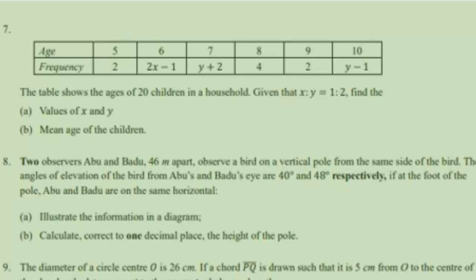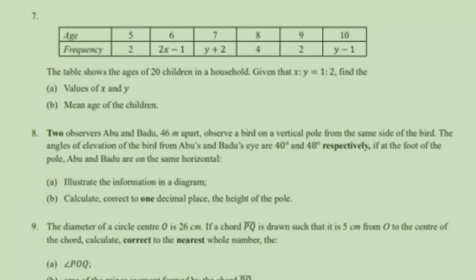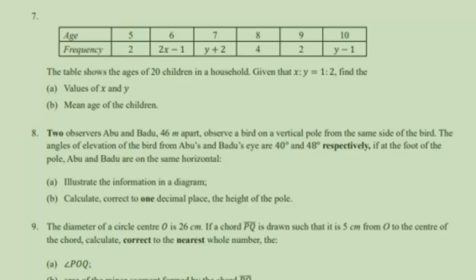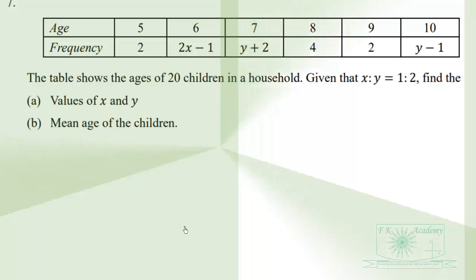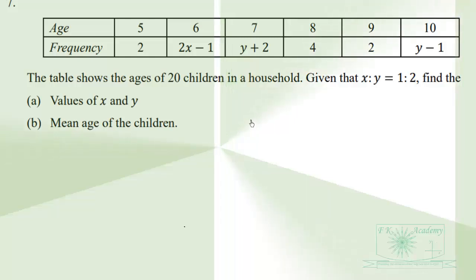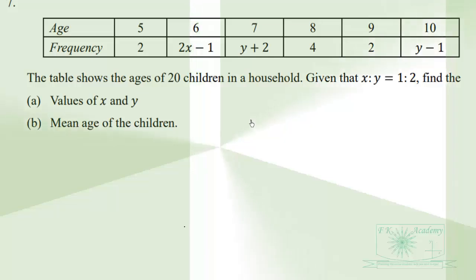With the Nigerian paper, the student has to apply the knowledge of simultaneous equations. Notice how the question was framed: the table shows the ages of 20 children in a household. Given that x is to y is equal to 1 is to 2, find the value of x and y, and the mean age of the children. We need to add all values to get 20 children in a household.